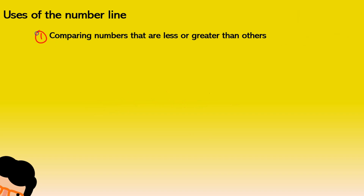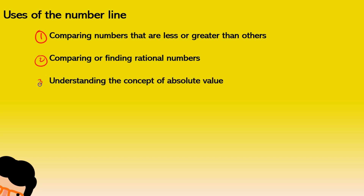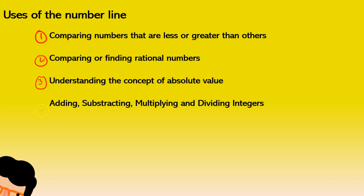So that's the first use. Then we can use the number line to compare or find rational numbers — you can find fractions or decimals. We can also understand the concept of absolute value, which we'll have a dedicated video to explain. Number four, we can use it to add, subtract, multiply, or divide integers. These are going to be videos on their own because it's very important to know about these concepts using the number line.